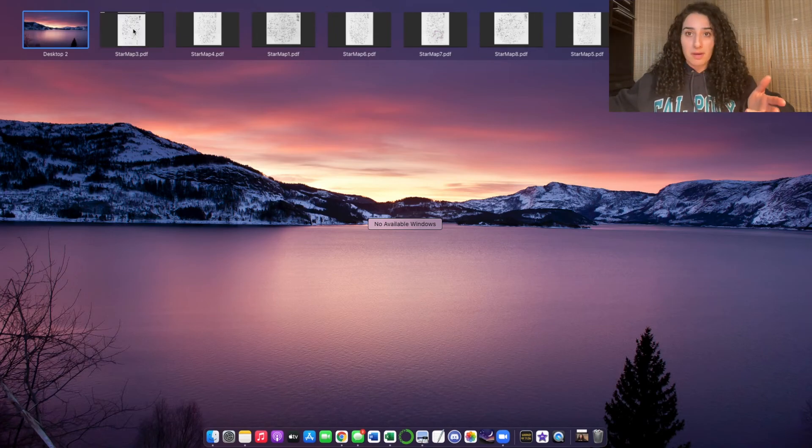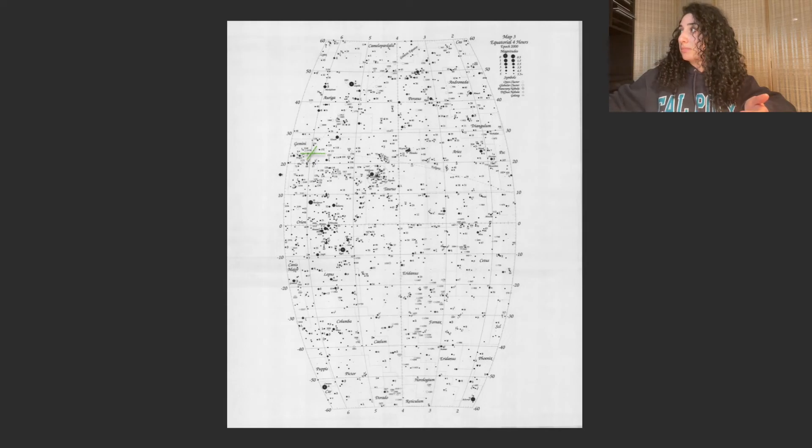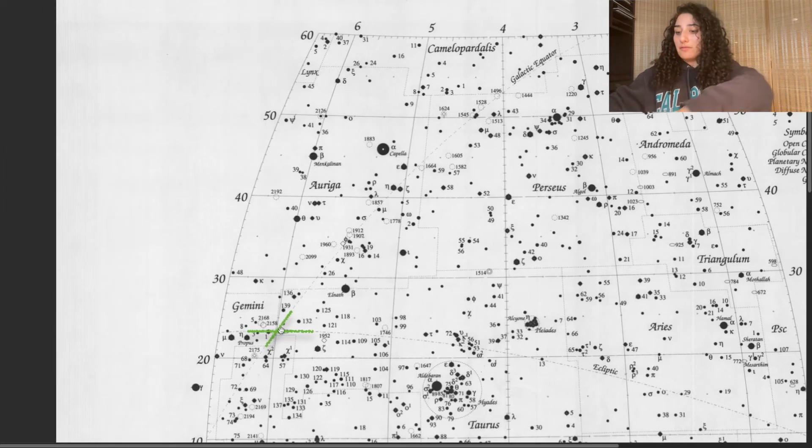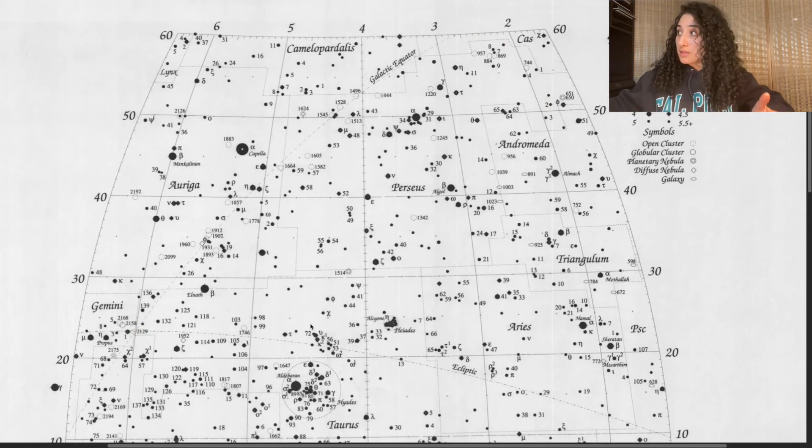So let's go ahead and open up the first map that I have, which happens to be map number three, as you can see right here in the top right, the label of this particular map. And it just so happens that we actually do have the map that we do need, because in this case, the galactic equator and the ecliptic are both visible in this map.